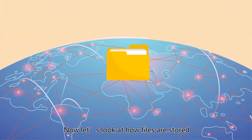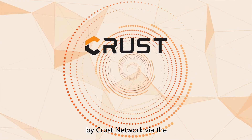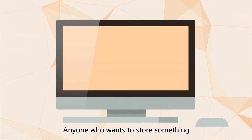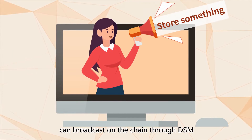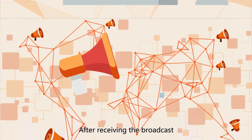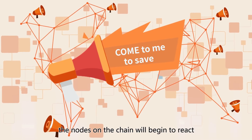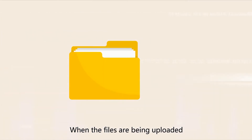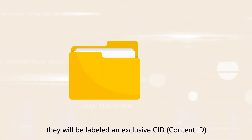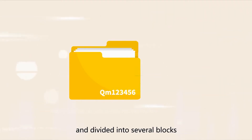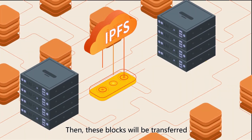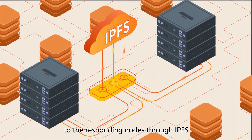Now, let's look at how files are stored by CRUST network via the Decentralized Storage Market. Anyone who wants to store something can broadcast on the chain through DSM. After receiving the broadcast, the nodes on the chain will begin to react. When the files are being uploaded, they will be labeled an exclusive CID and divided into several blocks.